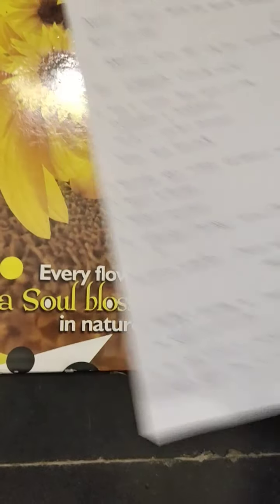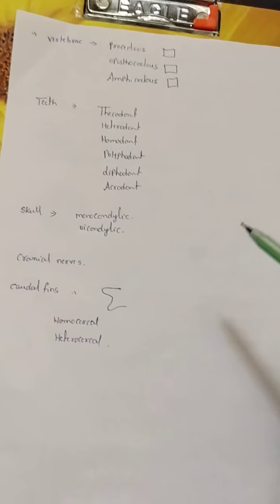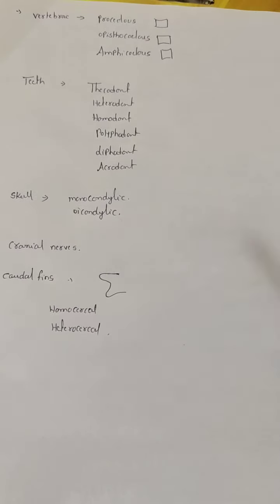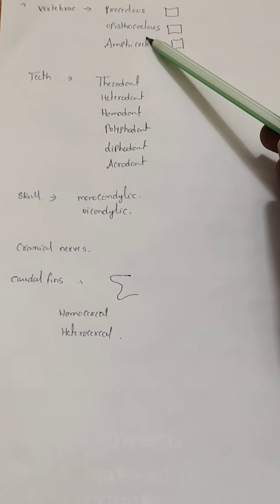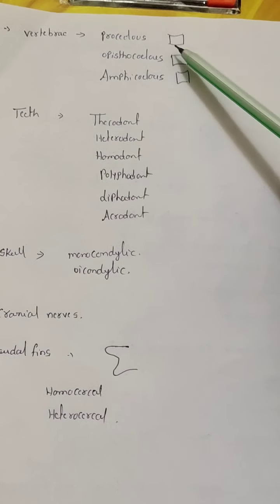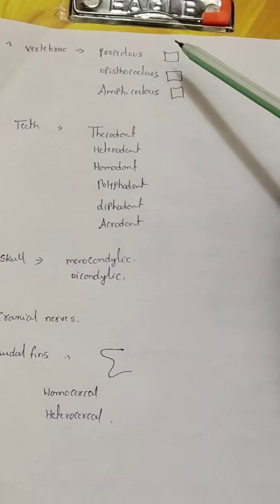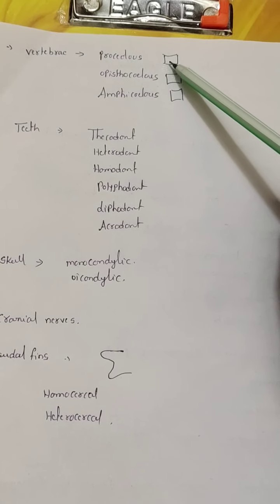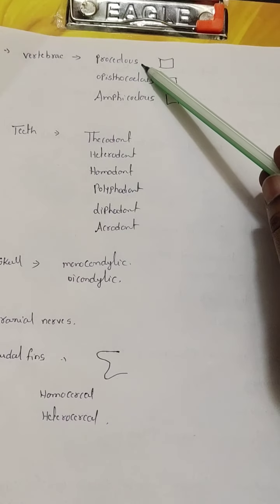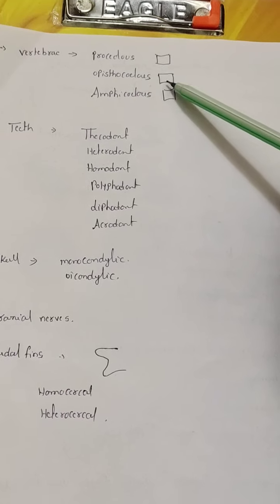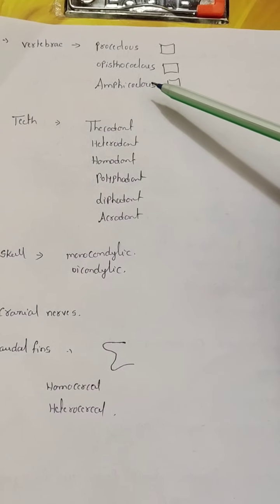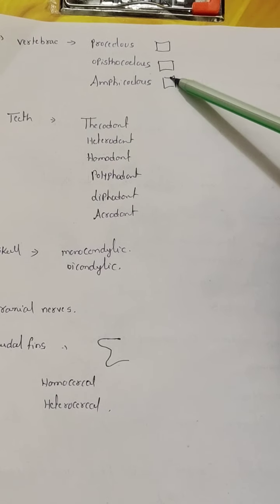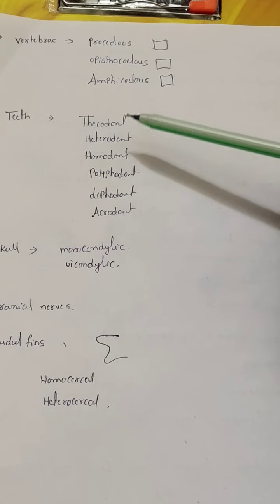Regarding common characters of vertebrates, there are different types of vertebrae. Procoelous vertebrae have an anterior concave and posterior flat surface. Opisthocoelous vertebrae have a posterior concave and anterior flat surface. Amphicoelous vertebrae have both sides concave.